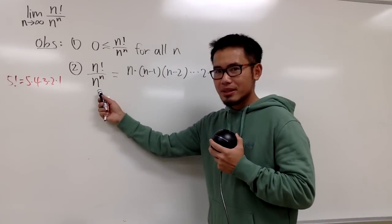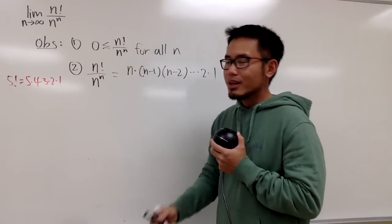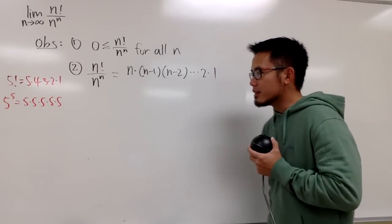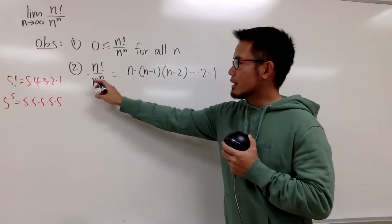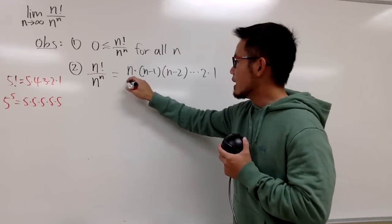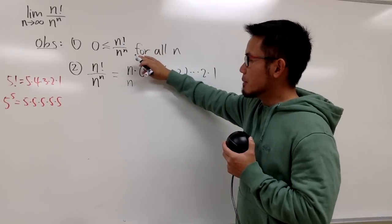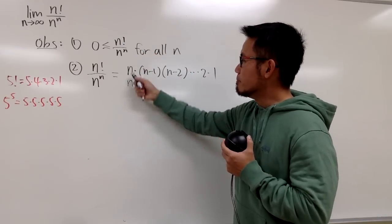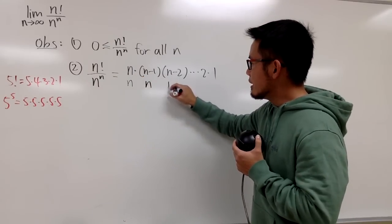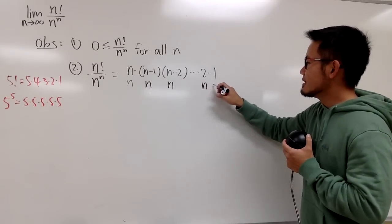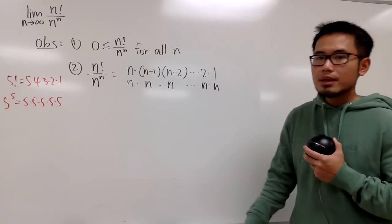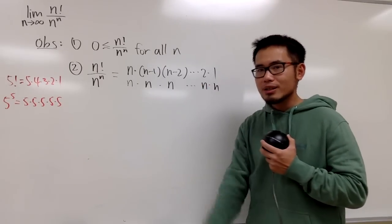Now look at the denominator: n to the nth power means we write down the base n a total of n times and multiply them together. So we have n factors on the bottom as well. We can pair up each factor in the numerator with one n in the denominator — the first n with n, the second factor (n−1) with n, and so on. They all pair up nicely.